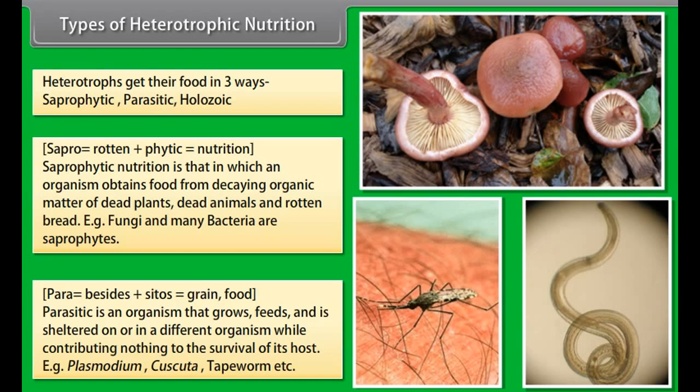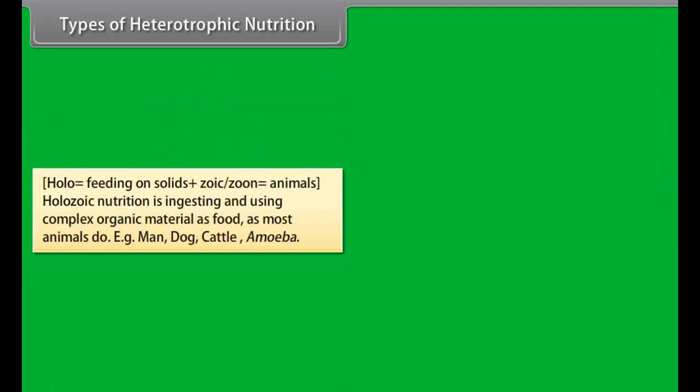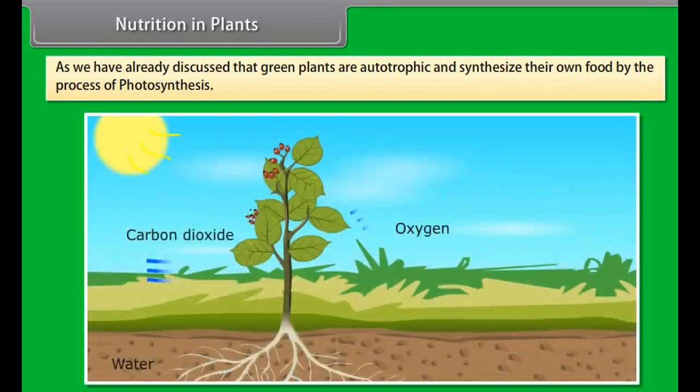Para means besides. Parasitic is an organism that grows, feeds and is sheltered on or in a different organism while contributing nothing to the survival of its host. Examples include plasmodium, cascara, and tapeworm.